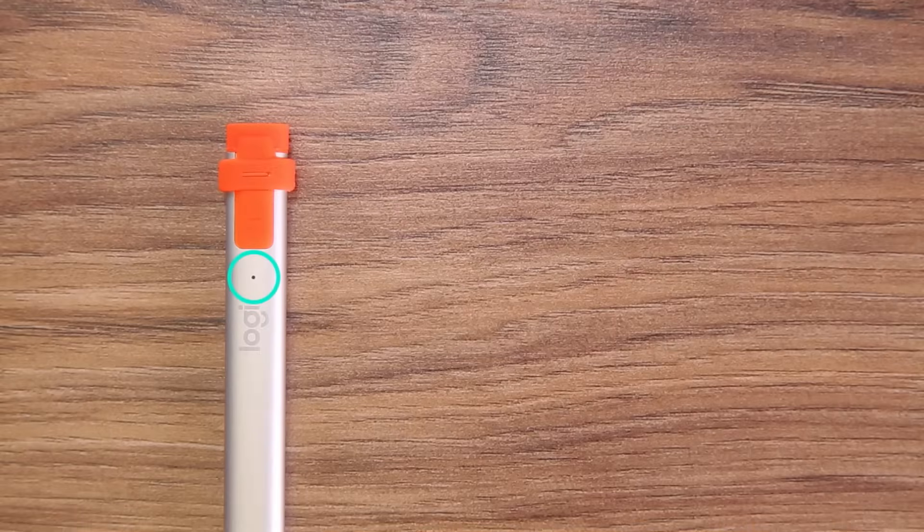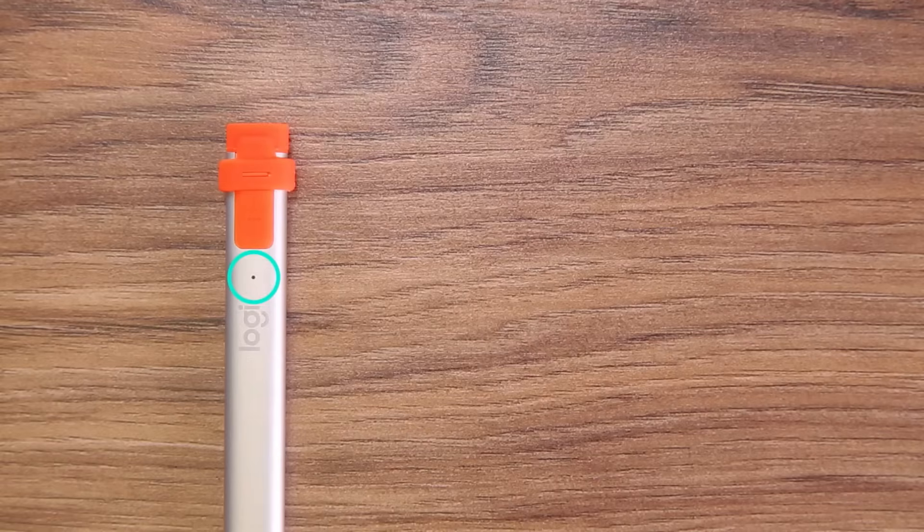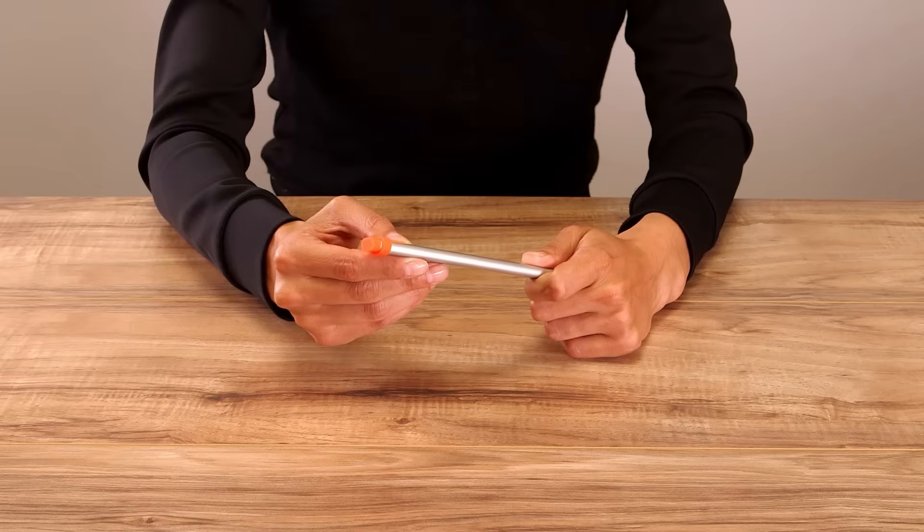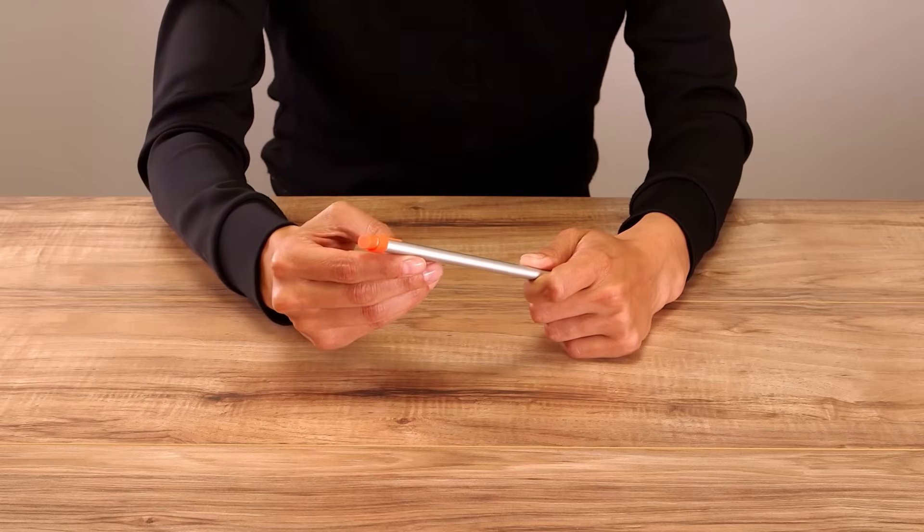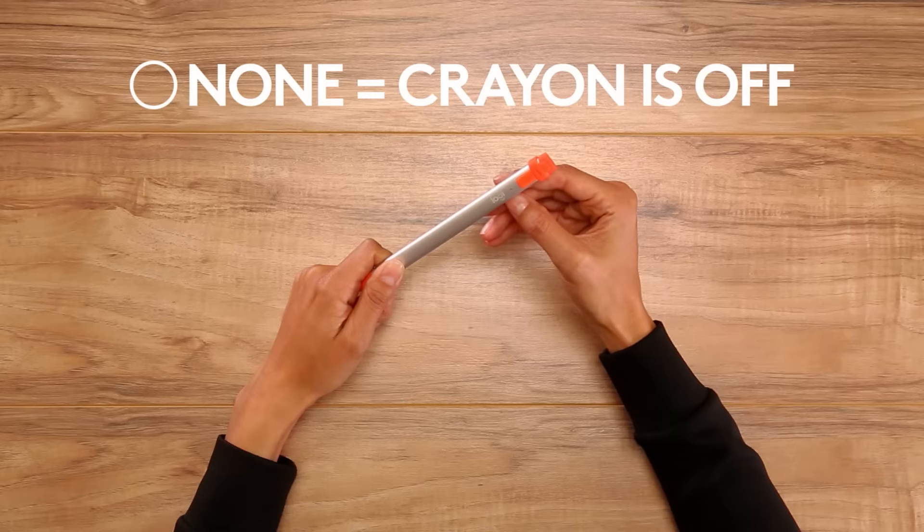The LED light under the power button identifies battery status and if Crayon is off or on. To check the battery, give the on-off button a short press. If the power is off, the LED light will not light up.